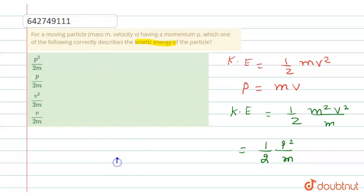So the answer is p square by 2m. So the first option is correct option.